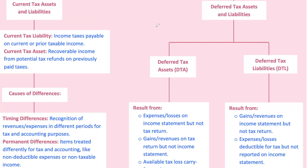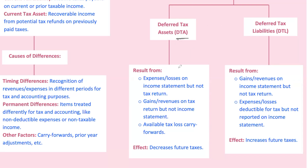Now let's dig into deferred tax assets, DTAs, and deferred tax liabilities, DTLs — think of these as the yin and yang of the tax world. A deferred tax asset is like a tax refund in the future. A DTA happens when you've paid more tax now and expect to get some relief later. For example, if a company has a tax loss carry-forward — meaning they can use past losses to offset future taxable income — that's a deferred tax asset. Another example: warranty expenses recorded now for accounting may not be deductible until actually paid out, creating another deferred tax asset.